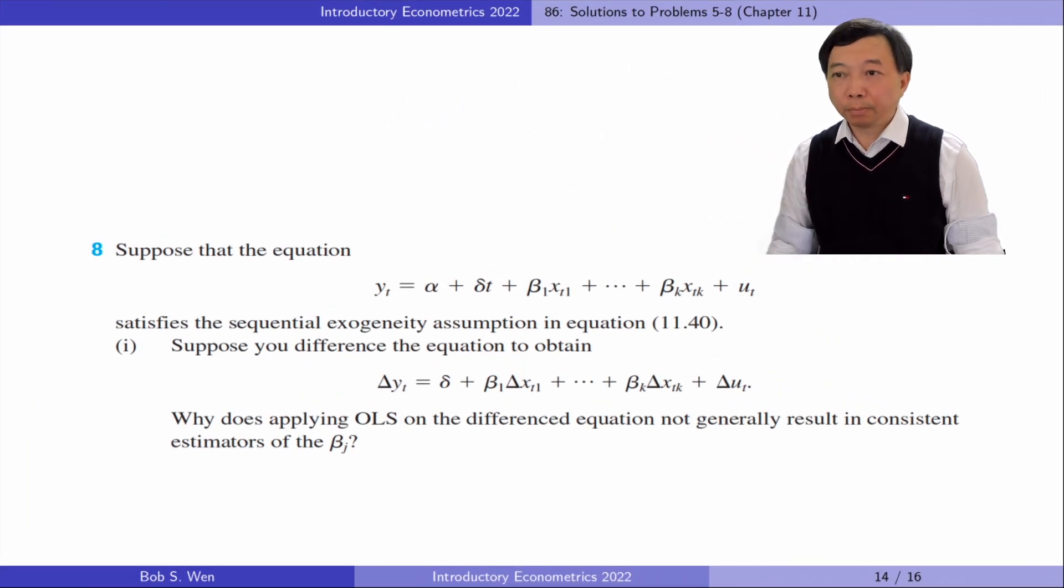Let's finish the last problem. Suppose the equation satisfies the sequential exogeneity assumption equation in equation 11.40. In part 1, suppose you difference the equation to obtain the following equation. Why does applying OLS on the differenced equation not generally result in consistent estimators of the betas?